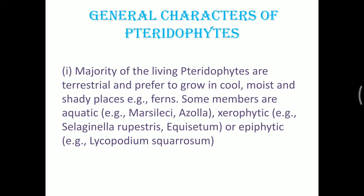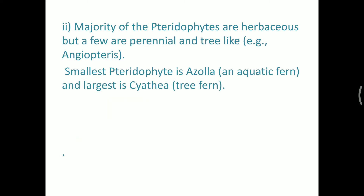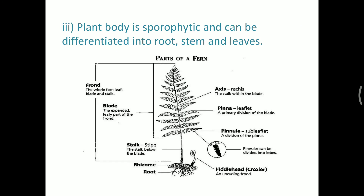These are all scientific names and must be underlined: Marsileaceae, Azolla, Selaginella, Lycopodium, Equisetum. Majority of pteridophytes are herbaceous, perennial, and grow throughout the year. Some are tree-like, such as Cyathea, which is so large it looks like a palm tree and is the largest fern. The smallest pteridophyte is Azolla, which is an aquatic fern.